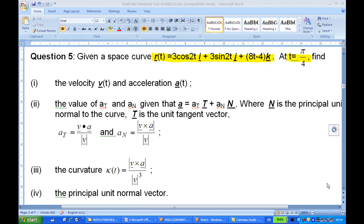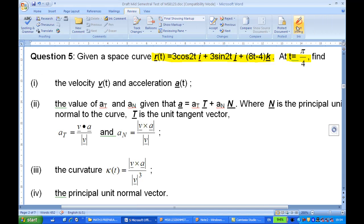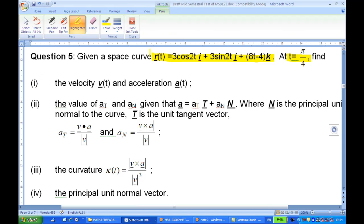Hi, for this recording, I will show you how to do 2009 MST Question 5 Part 2. Given the position at time t of a particle is 3 cosine 2ti plus 3 sine 2tj plus 8t minus 4k. At time t equal pi over 4, we are going to find the value of At and An. What is this At and An?